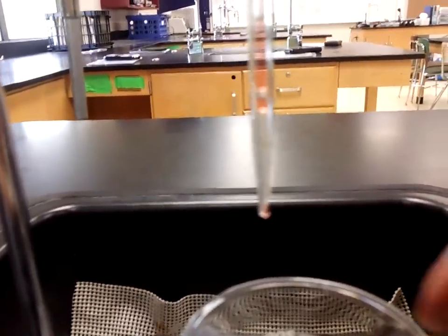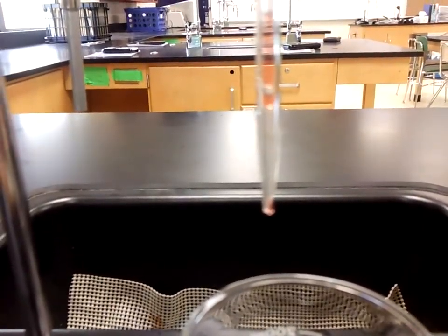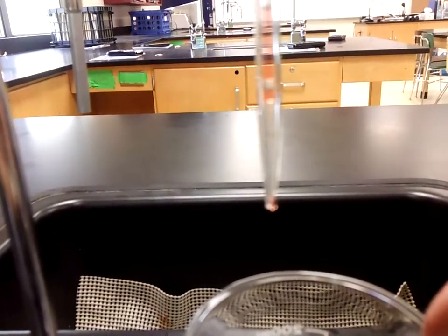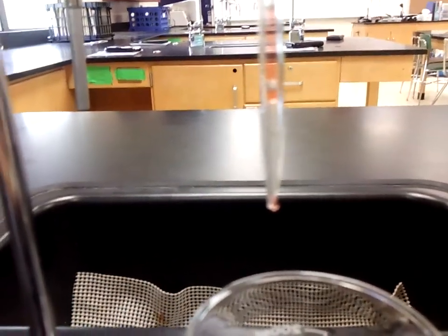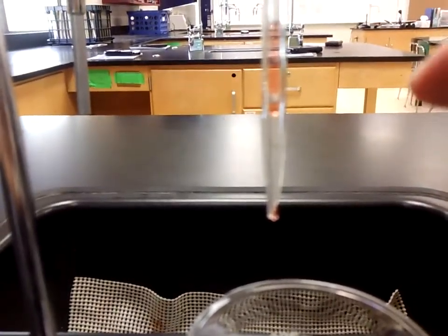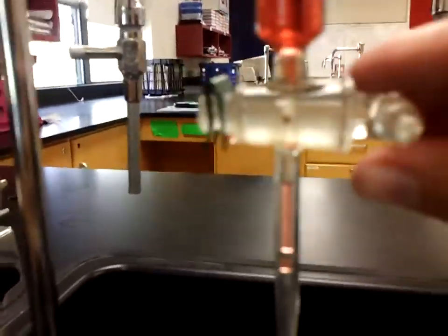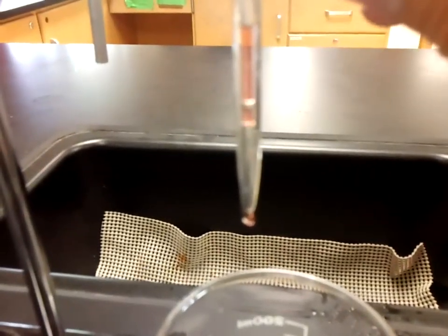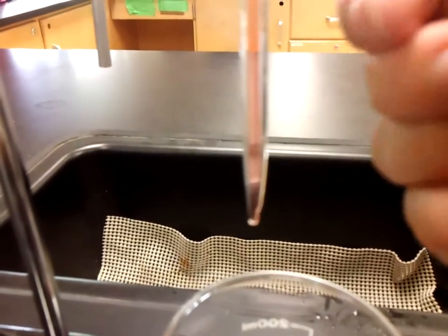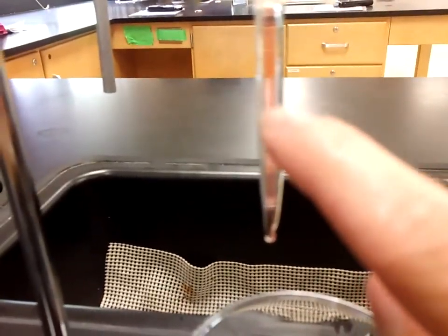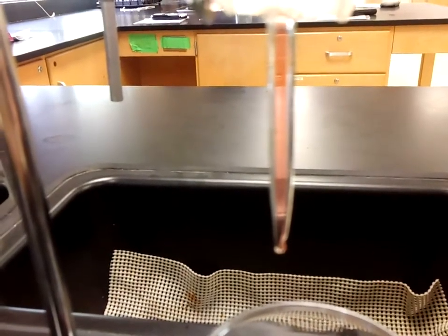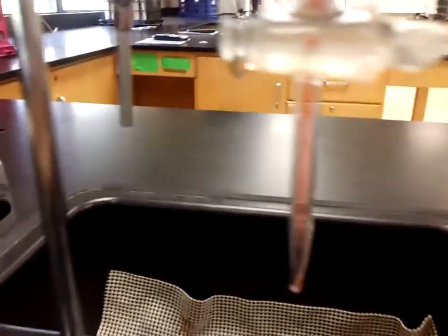Once again, that volume is not going into your beaker, your Erlenmeyer flask, or whatever your reaction is, it's going through the tip. So please make sure that when you start, before you fill it, before you take your first volume reading, you want to go ahead and make sure that you drain some of this off, and you can drain it into the sink, you can drain it back into your initial container, but that your tip of your burette should be filled all the way with liquid before you start.